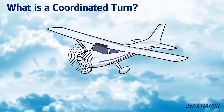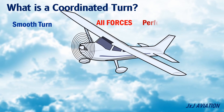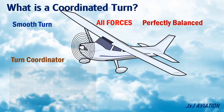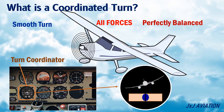A coordinated turn is a smooth turn in which all the forces are perfectly balanced. To ensure a coordinated turn, a turn coordinator on the aircraft instrument panel is used. This shows the aircraft's bank, and this shows the amount of yaw or rudder input that is required.